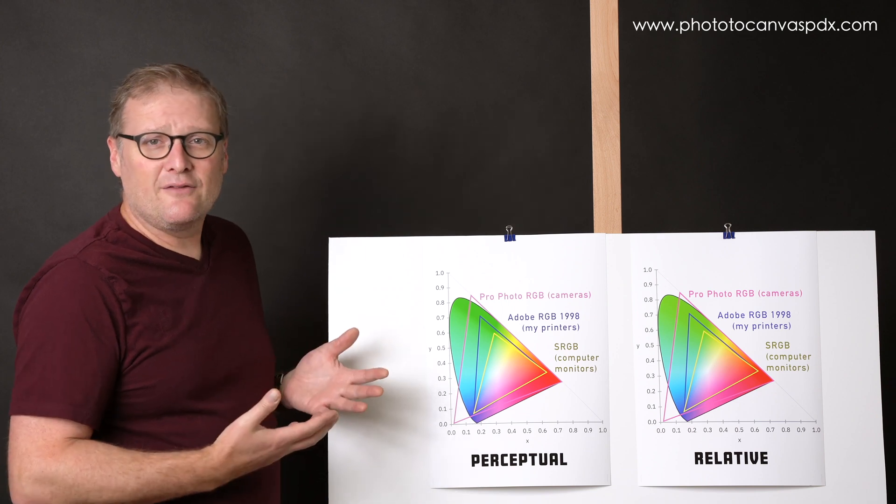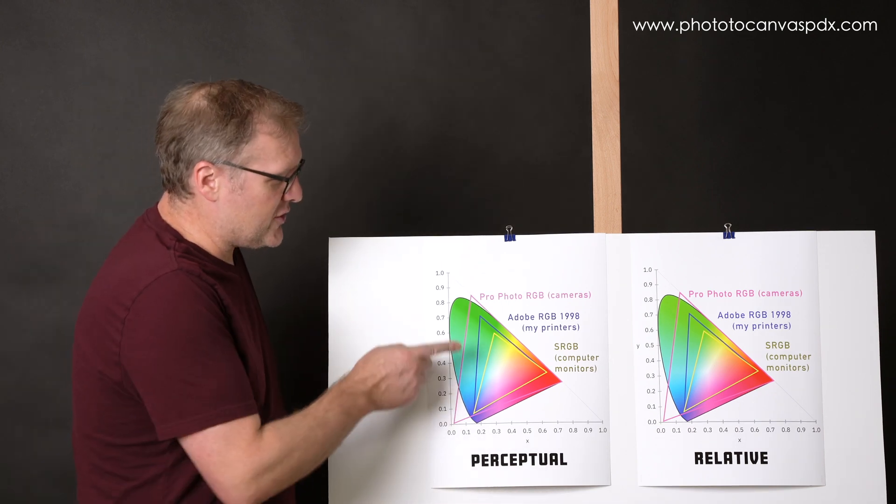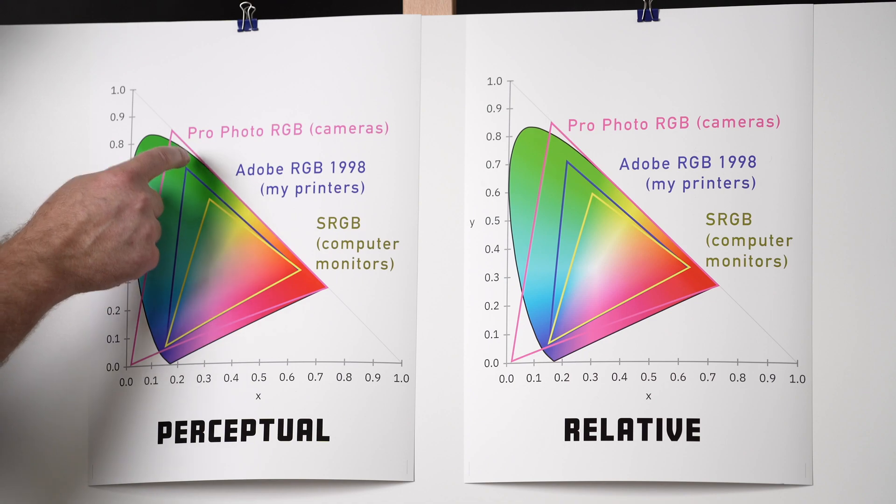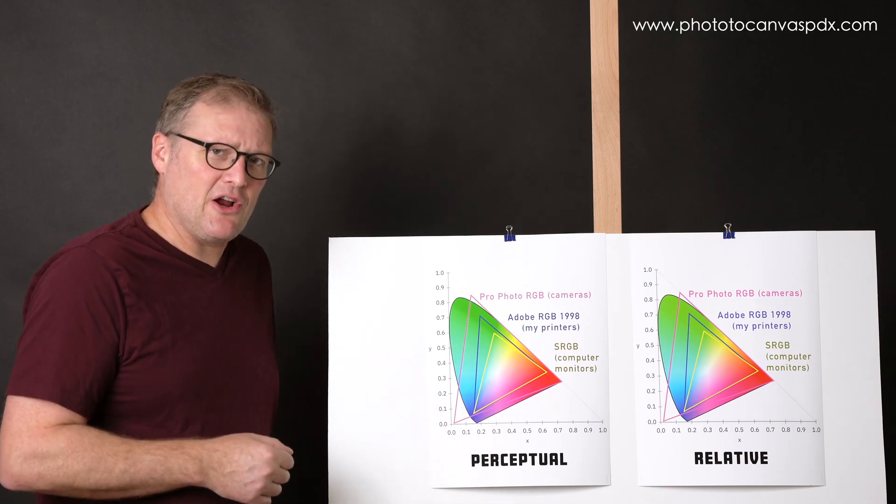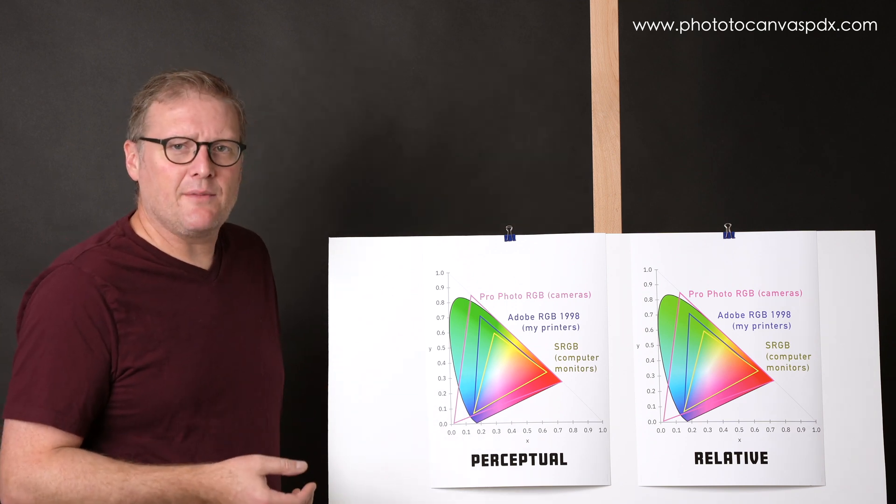Now keep in mind, when you soft proof or you use software to look at what colors are out of gamut, you're not often going to find a ton of colors. Very saturated greens, some blues, some violets, that's ProPhoto. And with Adobe RGB, you're going to get some yellows, some reds. But you'd be surprised if you do a gamut check on your images in soft proofing, how few colors are actually out of gamut.